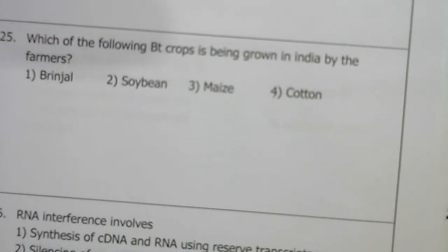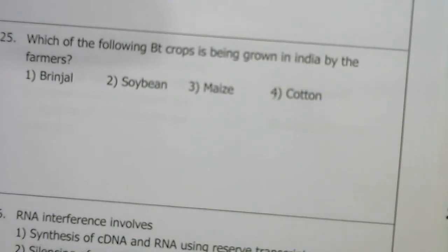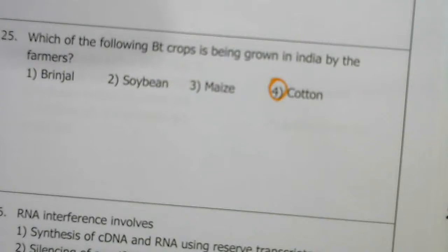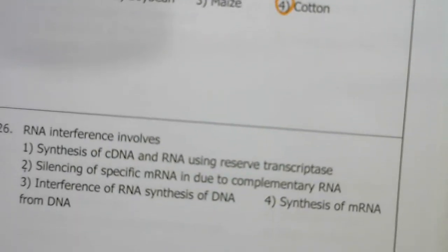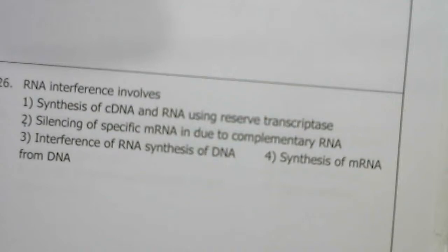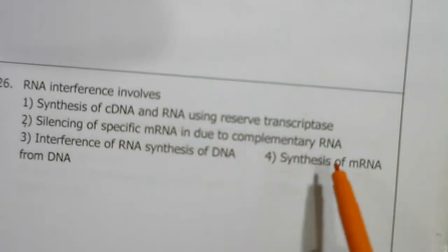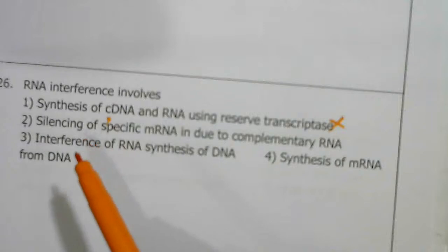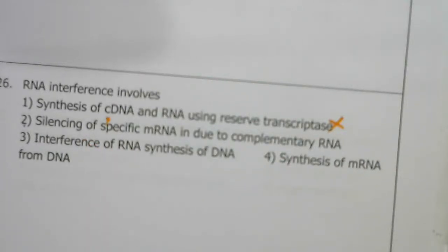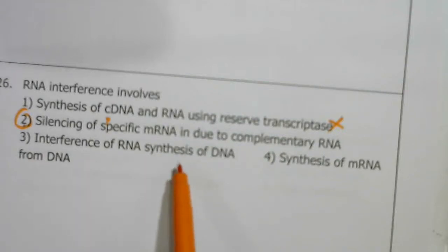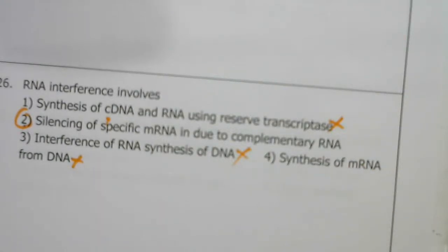Which Bt crop is grown commercially in India? It is Bt cotton. Many people are against growing Bt brinjal. RNA interference involves silencing of specific mRNA due to complementary RNA — the second option is correct. Synthesis of complementary DNA using reverse transcriptase is wrong; synthesis of mRNA from DNA is transcription — wrong. So second option is right.